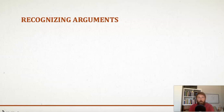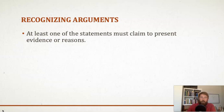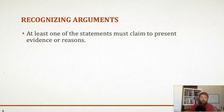In order for something to count as an argument in the first place, two conditions must be met. The first condition states that at least one of the statements — remember arguments are composed of statements — at least one of those statements must present some kind of evidence or reasons. Sometimes this is called the factual claim. We've got to have some statements that present the facts of the case, the evidence, the reasons, and these count as the premises. They are the parts of the argument that do the supporting.